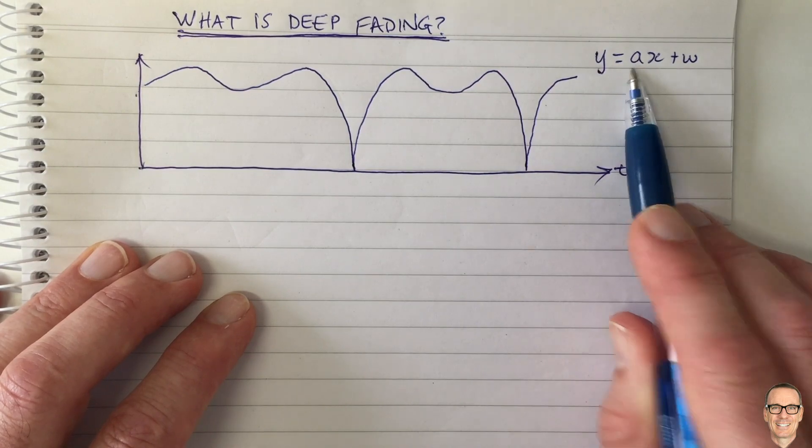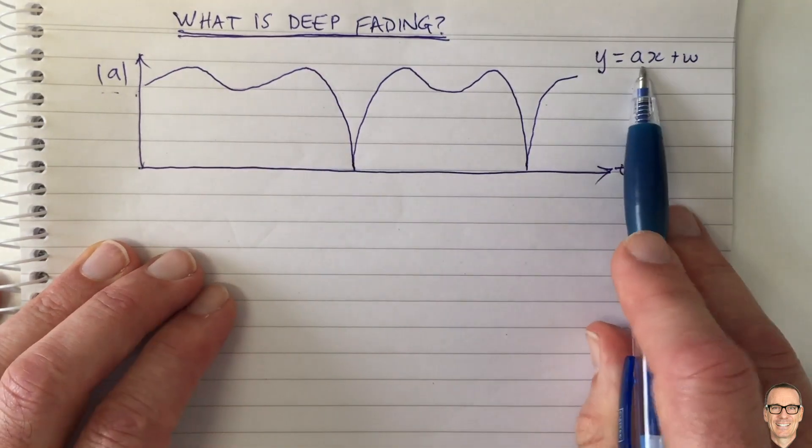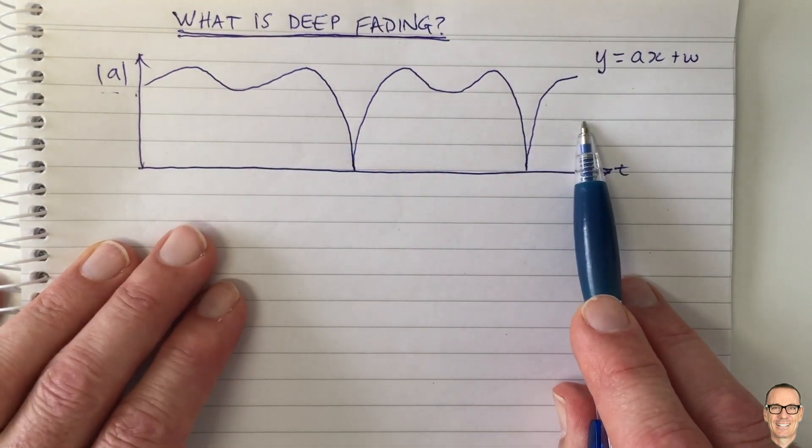And this channel gain fades over time, and we're plotting here the magnitude of A. That's what's normally plotted and shown to us.